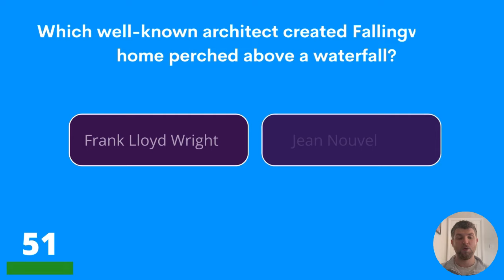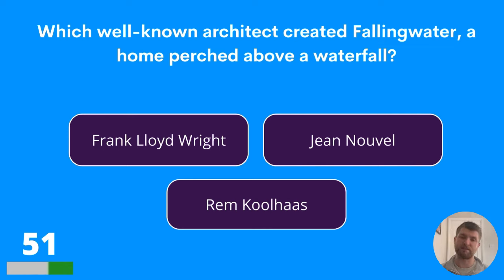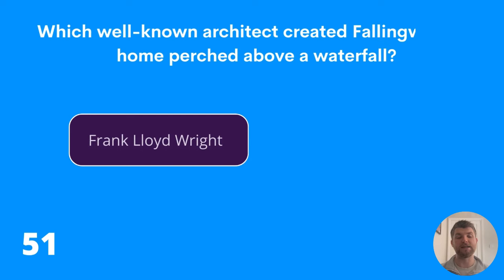Question fifty-one: which well-known architect created Fallingwater, a home perched above a waterfall? Frank Lloyd Wright, Jean Nouvel, or Rem Koolhaas? The answer is Frank Lloyd Wright.